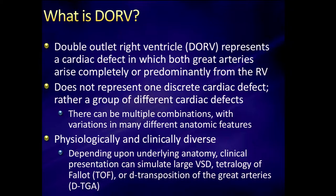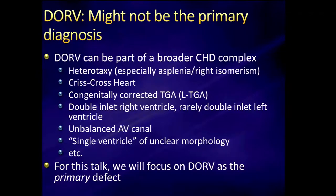We can define DORV as an entity in which both great arteries arise completely or predominantly from the right ventricle. There's so much variety — multiple combinations, multiple physiologic presentations anywhere from a VSD to a tetralogy-type flow or transposition of the great arteries. DORV may not be the primary diagnosis; it may be part of a larger group including heterotaxy, criss-cross heart, or congenitally corrected transposition. For this talk, I'm going to focus mainly on DORV as a primary defect.